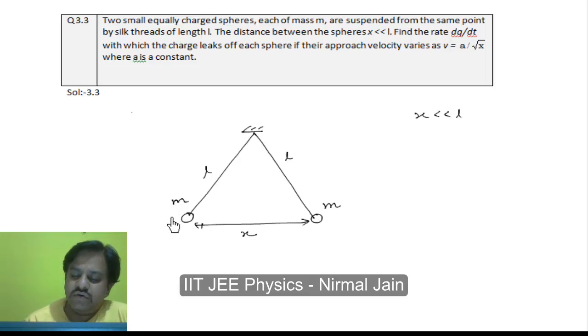Here we must suppose that the two spheres are having charge Q and they are approaching towards each other with this velocity, and this velocity is depending on X. The two spheres must be approaching each other because the charge is getting leaked out of this system or these spheres.